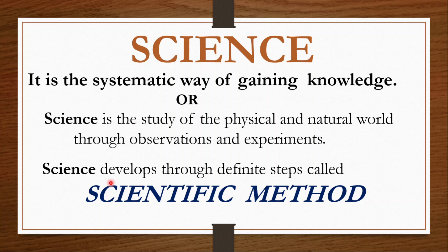Likewise for fire also. Earlier we used to use stones — friction of stone from which fire used to be generated. After that we started using matchboxes, then lighters, then LPG gas. As time is going, it is nowadays much easier. Our life had become much easier. As science is developing, life is also becoming much more comfortable. Science in a systematic way — we are studying it. And that systematic method or systematic way, we call it as scientific method.